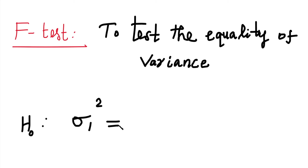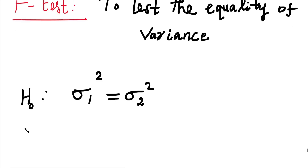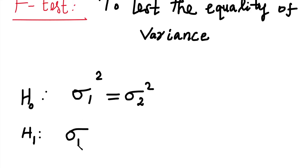For the F-test, H0: we assume sigma1 squared is equal to sigma2 squared. H1, the alternative hypothesis, is sigma1 squared is not equal to sigma2 squared — meaning we check whether the two variances are equal or not. We also consider whether sigma1 squared is greater than or less than sigma2 squared as the check point.